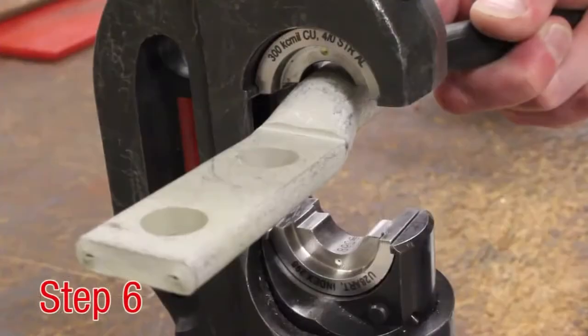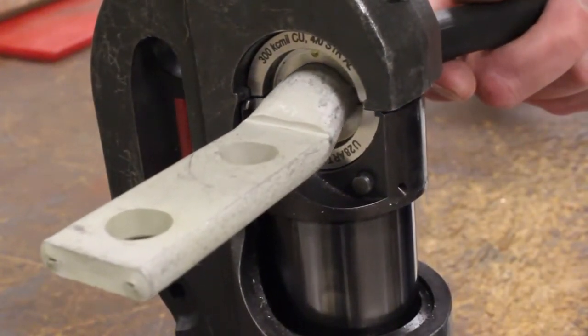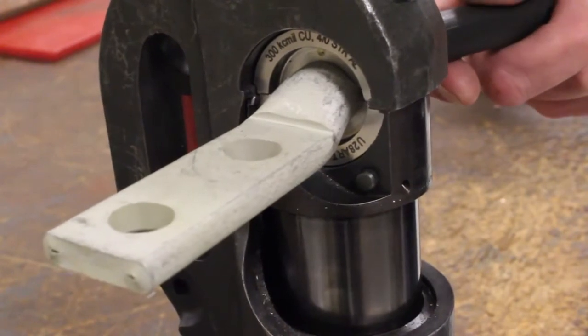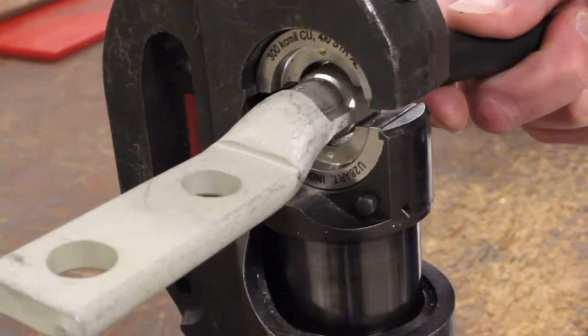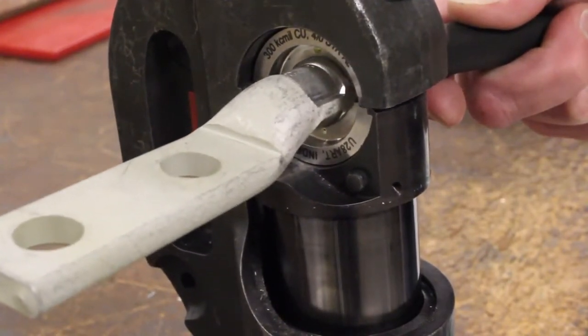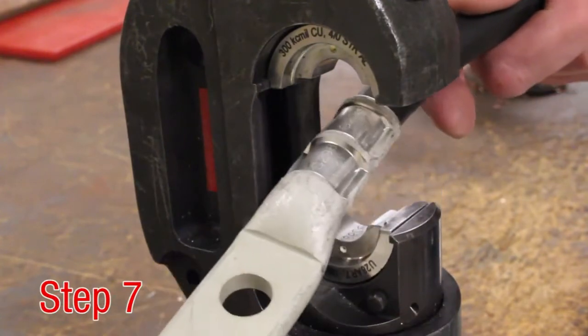Step 6. Be sure to always crimp from the tongue end to the conductor end. Start the crimping tool cycle and hold steady until the entire cycle is complete. Release ram. Repeat the same process until all crimp locations on the barrel have been completed. Step 7.